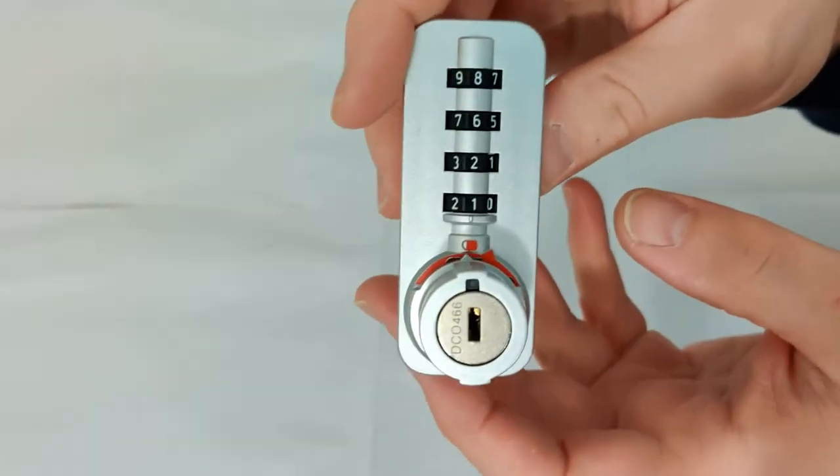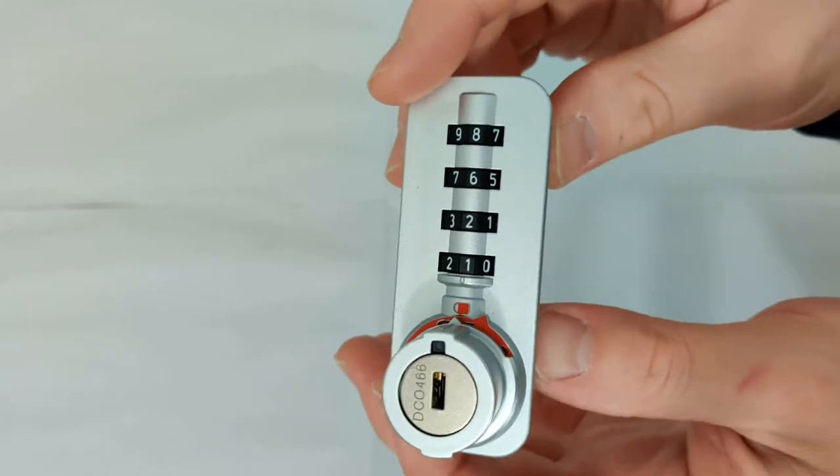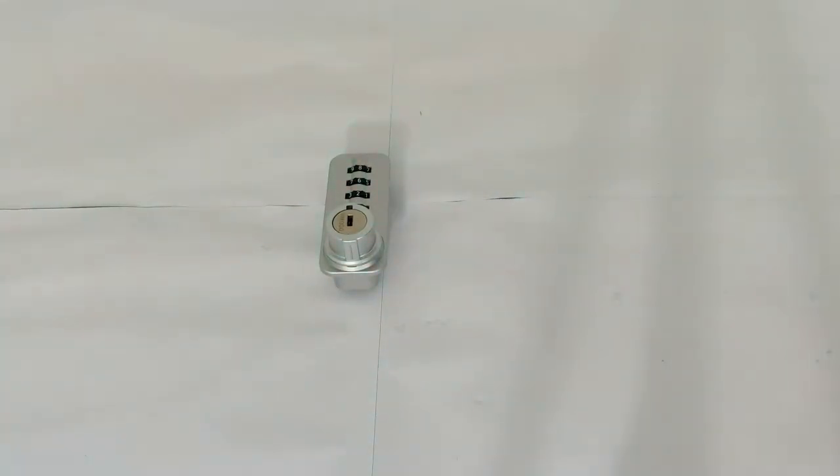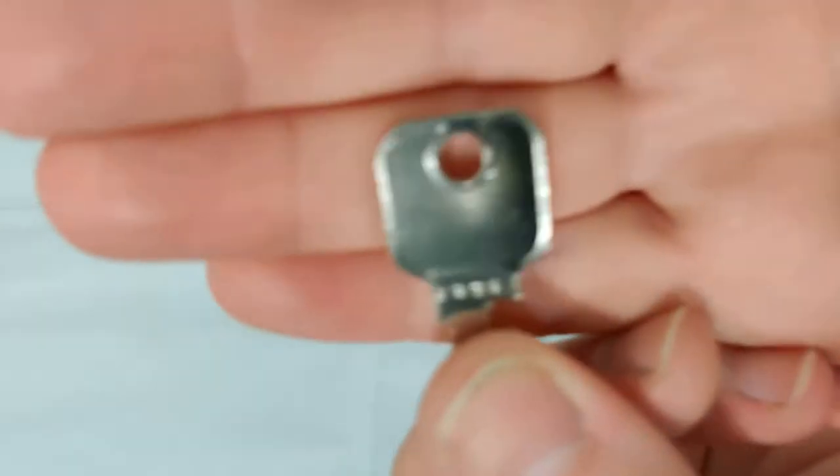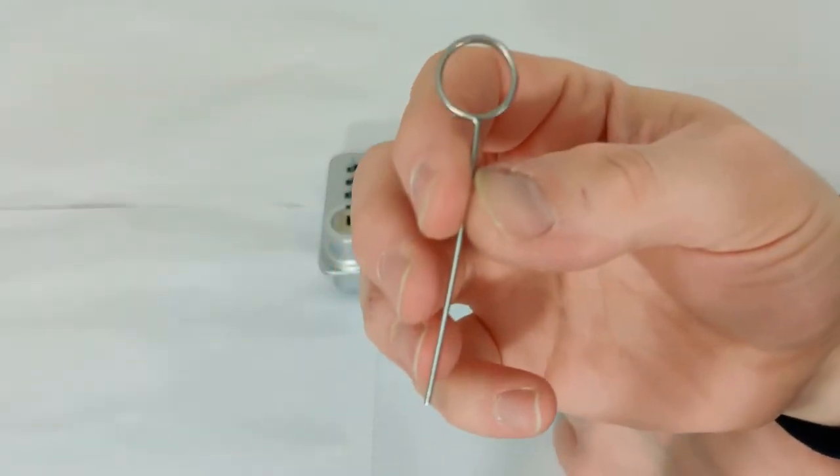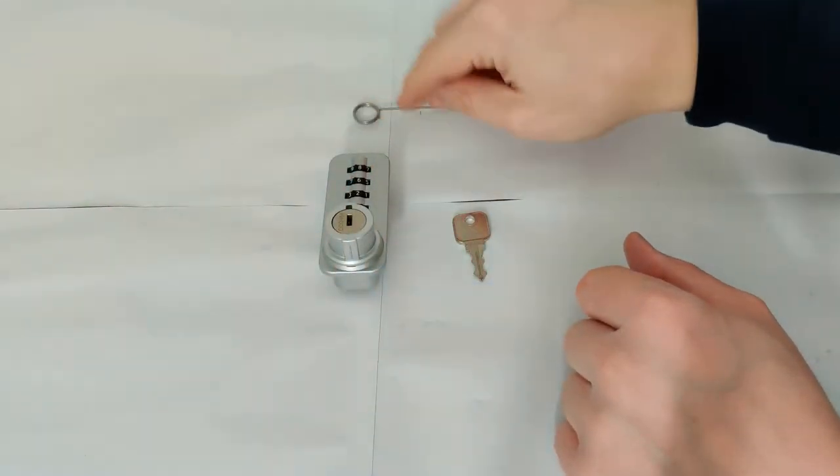Okay, so here is our lock in question. Now this has been set to a random combination and I genuinely don't know what it is. So in order to both recover and reset this code we are going to need our master key just here and we'll also need a pin. I'll show you what that does in a moment.